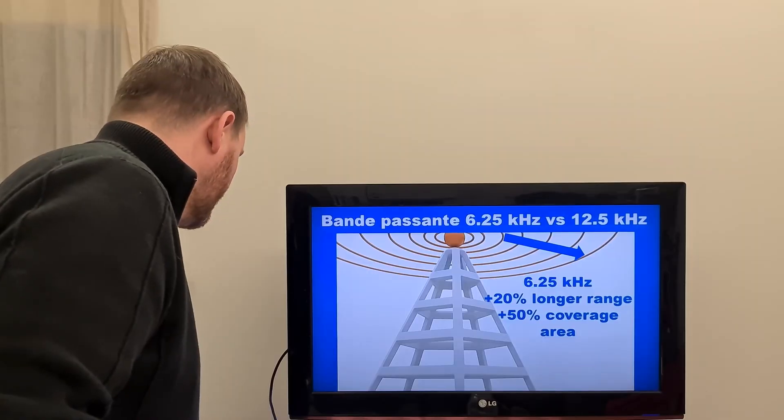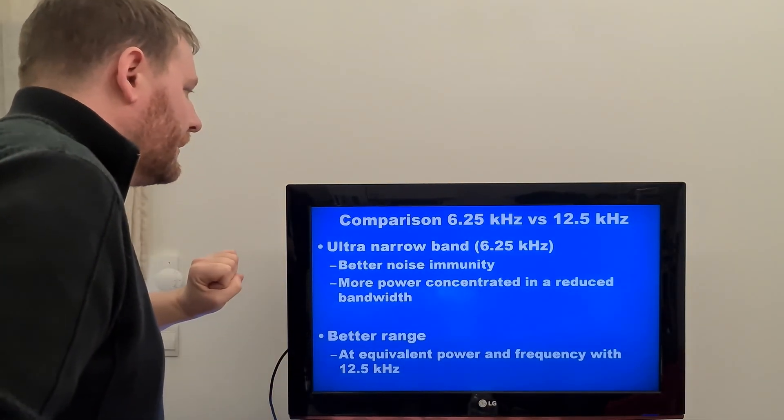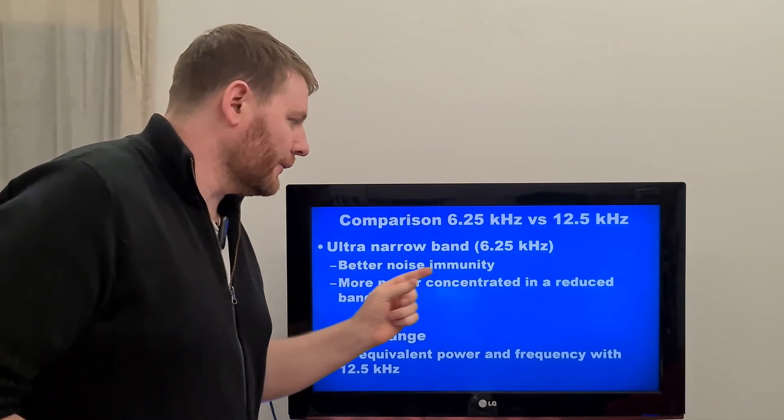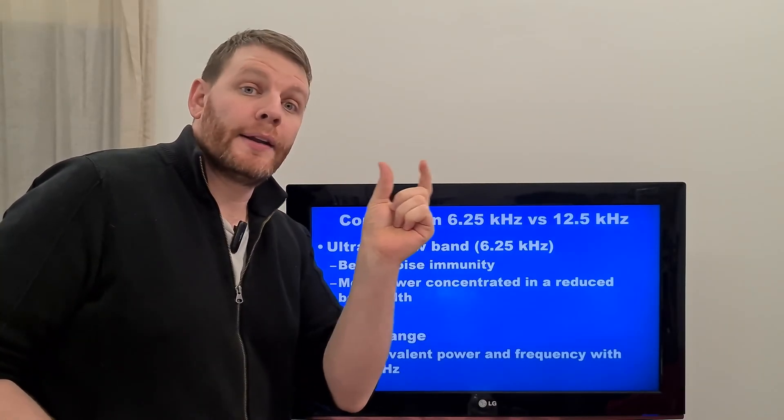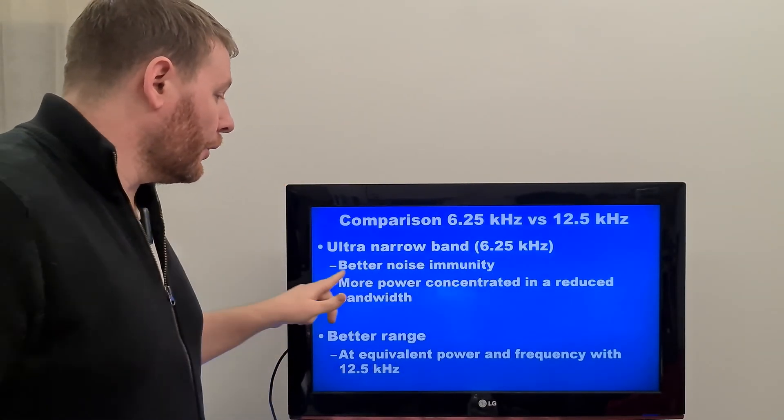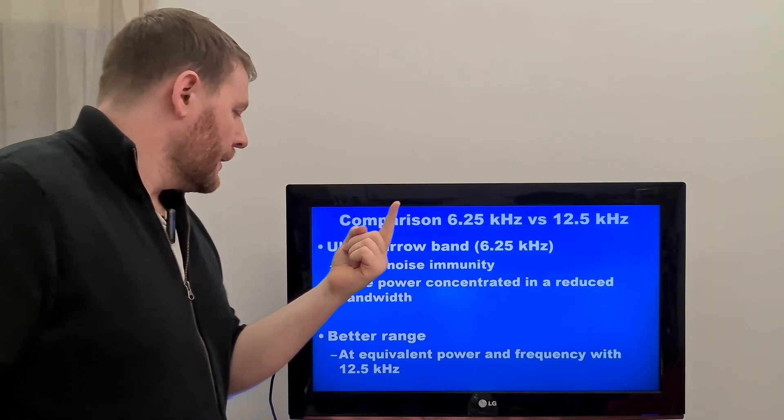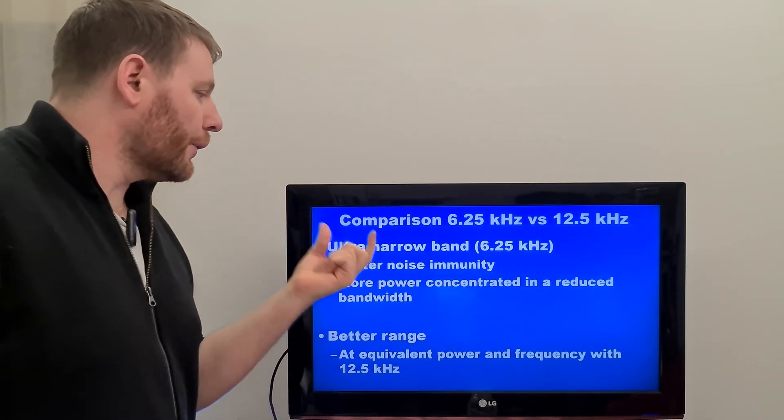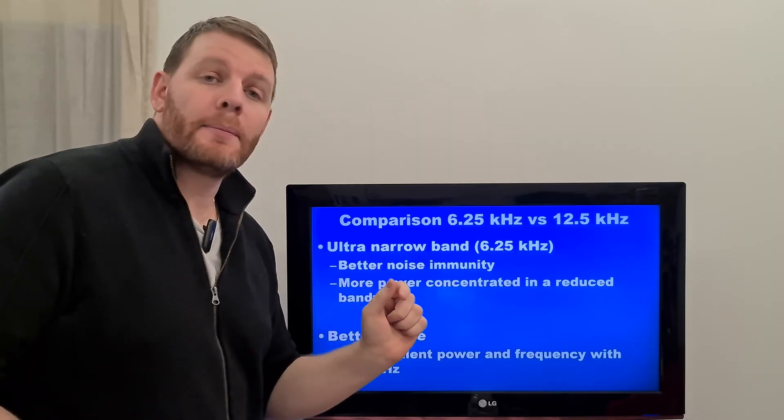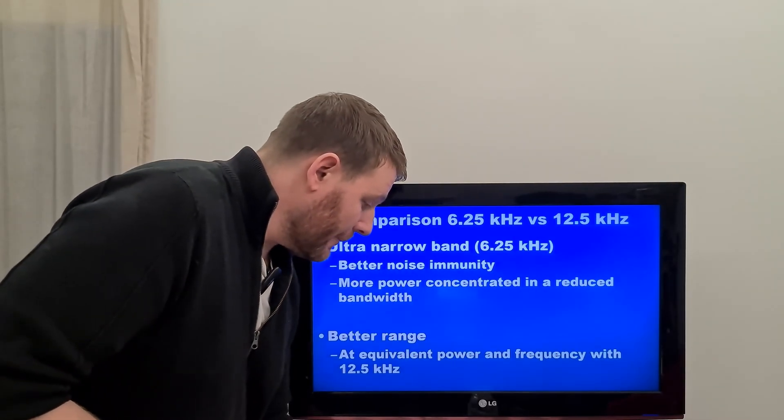Plus 60% of covered area when using 6.25 kHz by using same frequency and same power than using DMR. So, why is it better? It's better because the ultra narrow band have a better noise immunity and there is more power concentrated in reduced bandwidth.